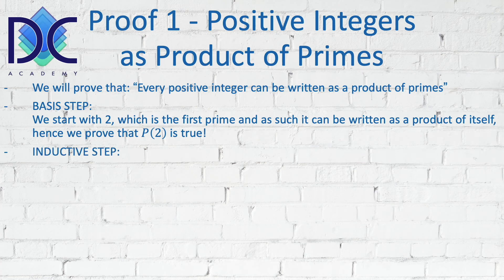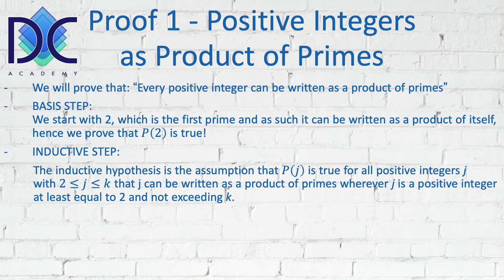The next thing is to look at the inductive step. The inductive hypothesis is the assumption that P(j) is true for all positive integers j, where j is between 2 and k. This means that j can be written as a product of primes for every positive integer at least equal to 2 and not exceeding k.